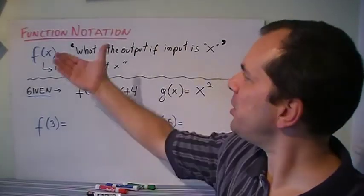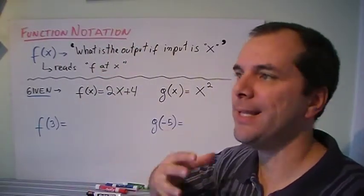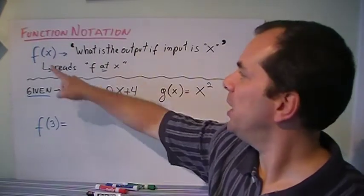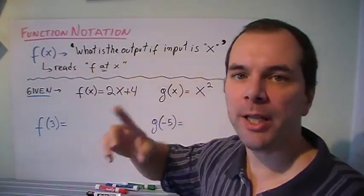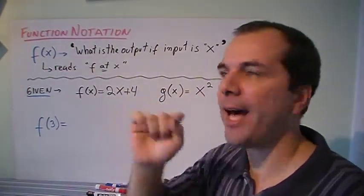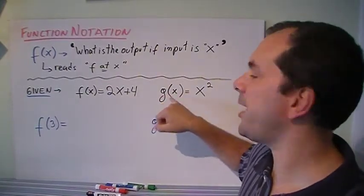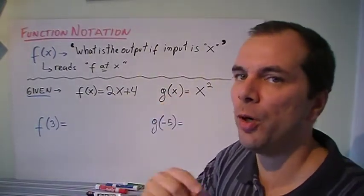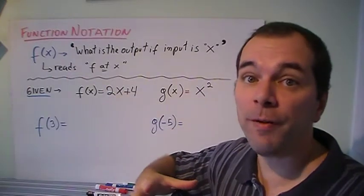Function notation is just a way to say something with less words. f at x, that's how we read it. f(x) is f at x, and here's g at x. You can use whatever letters you want for your input or for your function.